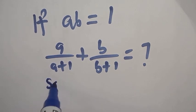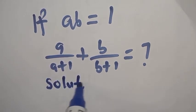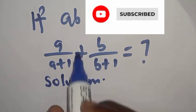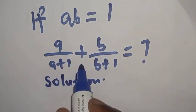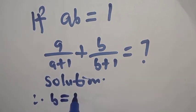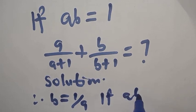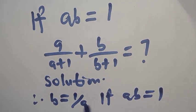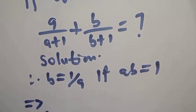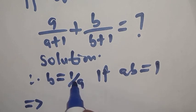Solution. If AB is equal to 1, therefore B will be equal to 1 over A. This implies that anywhere you see B, you substitute 1 over A.